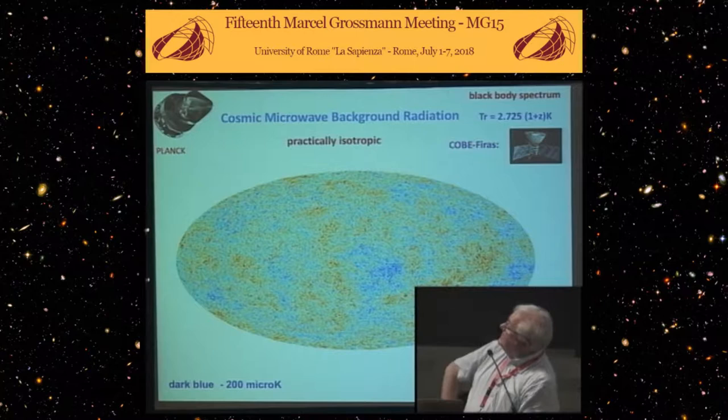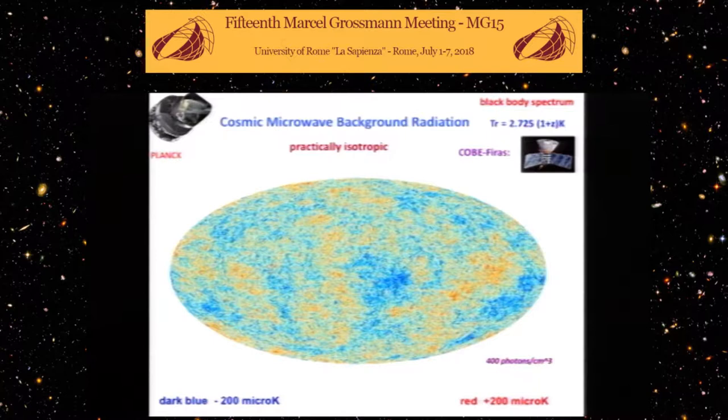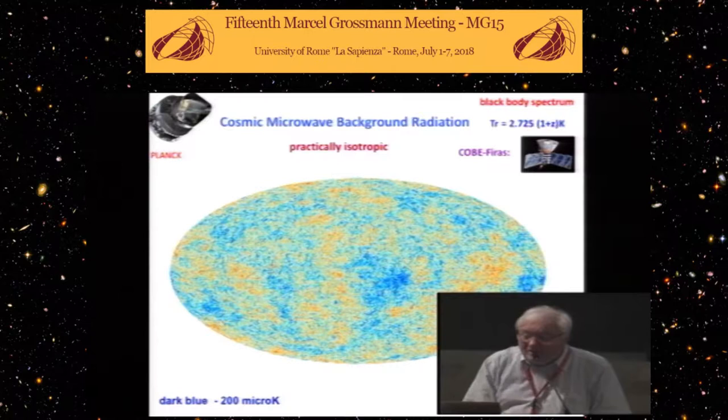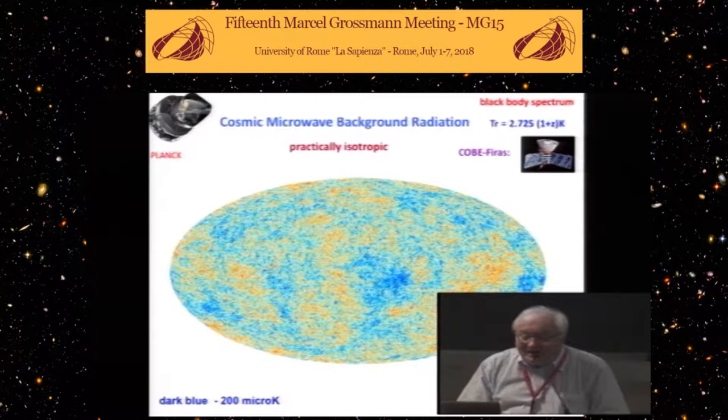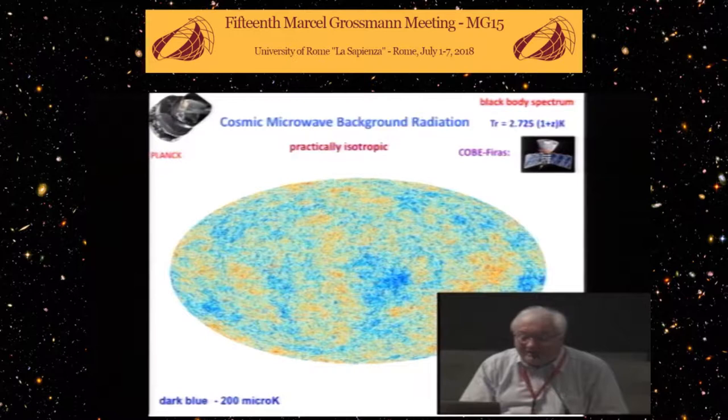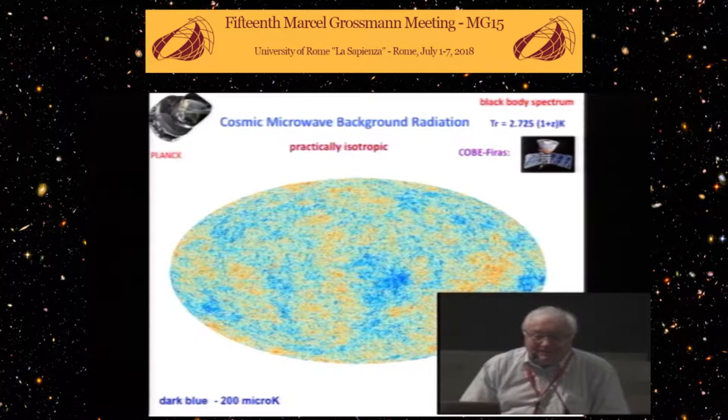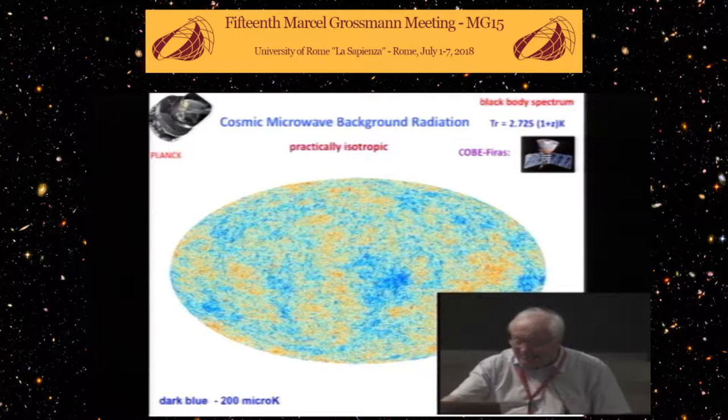I am showing you the map of CMB obtained by Planck and before by Boomerang and WMAP. This is a beautiful map which shows how uniform is our universe. The temperature of CMB today is 2.7 Kelvin, measured by COBE FIRAS and several spacecraft. The best data are coming from Planck, showing that this radiation is practically isotropic. The most bright red points are only 200 micro Kelvin brighter than average temperature, and the most blue spots are less than 200 micro K dimmer. This is our universe, it's very uniform and very isotropic.